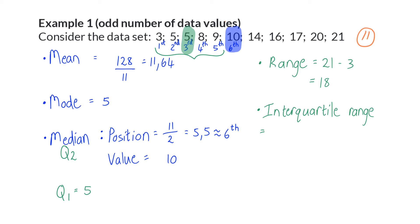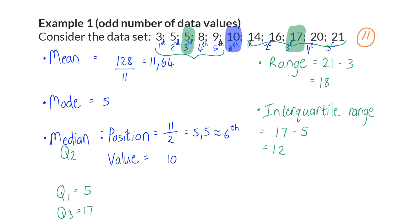For the top half of the data set, we again divide five values and focus on the third value, giving Q3 = 17. The interquartile range is Q3 minus Q1, which equals 12. Lastly, the semi-interquartile range is half of the interquartile range — 12 divided by 2 — giving us 6.